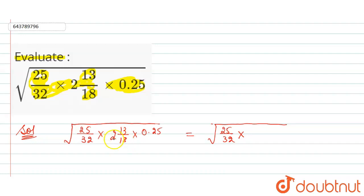Here 18 times 2 equals 36, and 36 plus 13 equals 49/18. And here there are two digits after the decimal, so we can write it as 25/100.